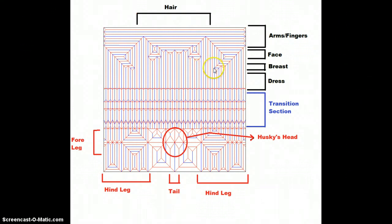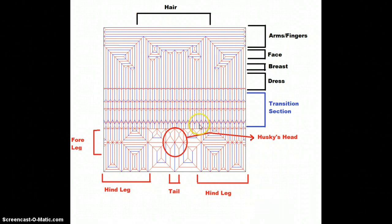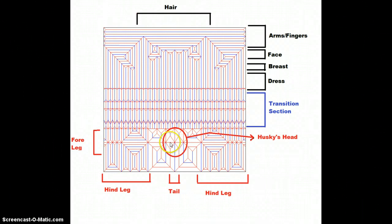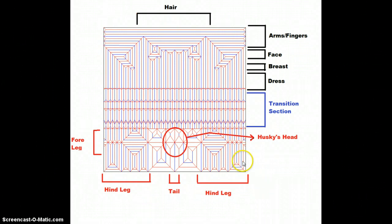The same thing works for the breast: you'll have a mountain fold that goes all the way across and then a valley fold all the way across. This is the bottom of the dress, and this whole transition section connects the lady to the husky. This section makes the husky's head, this section makes the husky's tail, the hind leg is here, and there's some extra paper we ignore for now. The four legs are right here on this side.